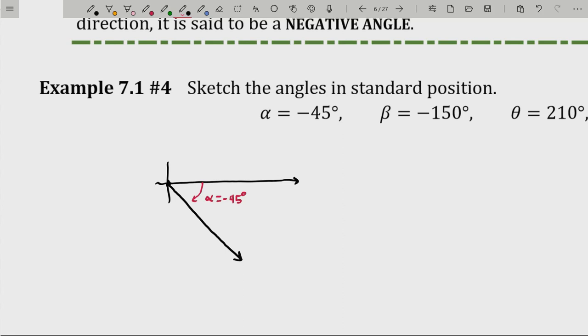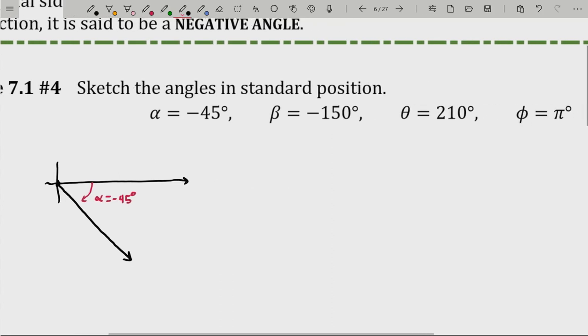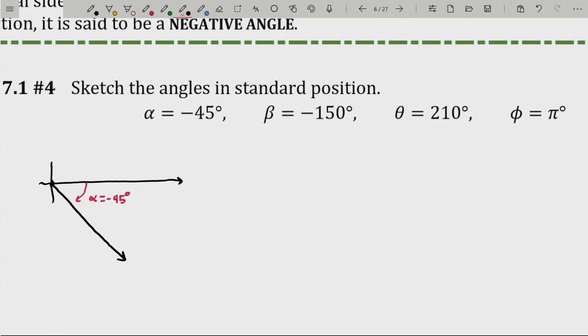Then you have beta, which is negative 150 degrees. Let's go ahead and draw that one in. Let's see. Origin. I don't need to go crazy with my ray there. I'll just go that far. And then again, it's a negative angle. I'll use red for that and I'll go backwards 150 degrees. So again, this is beta backwards 150 degrees. Backwards again is in the clockwise direction. There we go.